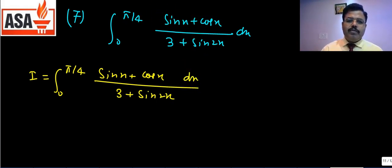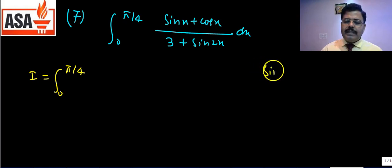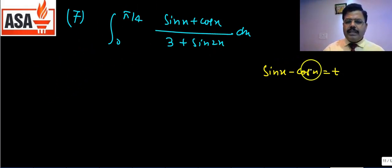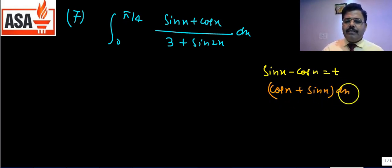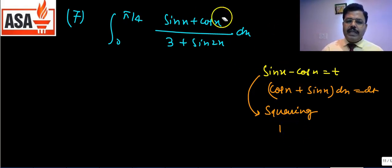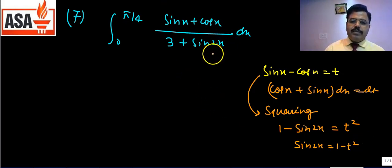We substitute t = sinx − cosx. Then dt = (cosx + sinx)dx, which matches the numerator. Squaring: t² = sin²x + cos²x − 2sinx·cosx = 1 − sin2x, so sin2x = 1 − t². The denominator 3 + sin2x becomes 3 + (1 − t²) = 4 − t².